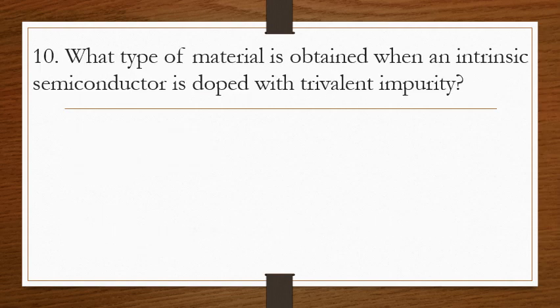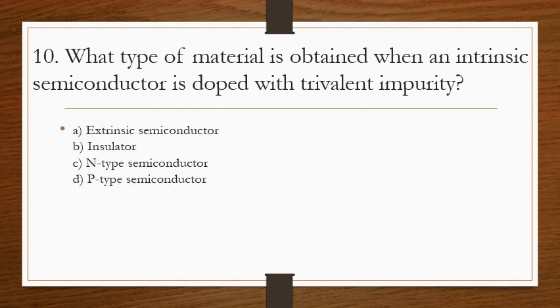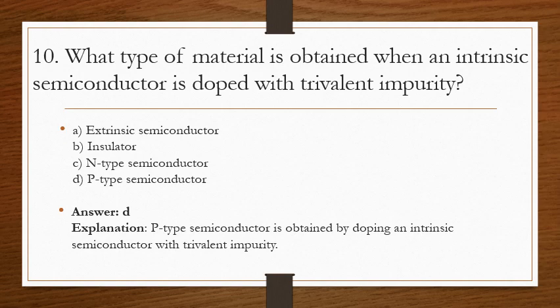Question 10: what type of material is obtained when an intrinsic semiconductor is doped with a trivalent impurity? The correct answer is D. P-type semiconductor is obtained by doping an intrinsic semiconductor with a trivalent impurity.